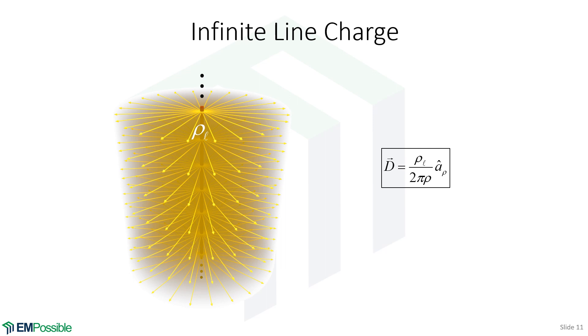An infinite line charge. Notice this is uniform in the direction of the line charge. Now this is a straight line charge. If it were to curve and meander, I think it would change that picture a little bit. But for a straight line, it is uniform in that vertical direction. And the field emits radially out from that line charge.